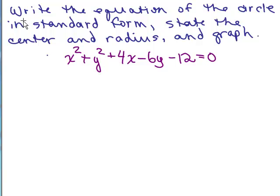Here's our problem. Write the equation of the circle in standard form. State the center and radius and graph. What's nice is that we're told that this is a circle so that's easy. This is the equation of a circle in general form, x² + y² + 4x - 6y - 12 = 0, so it doesn't tell us the center or the radius. That's exactly why we're being asked to put it in standard form first.